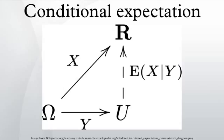Let (Ω, F, P) be a probability space, X a random variable on that probability space, and H an event with strictly positive probability. Then the conditional expectation of X given the event H is defined, where the range of X and the conditional probability of A knowing H are used. When P(H) equals zero, the Borel-Kolmogorov paradox demonstrates the ambiguity of attempting to define the conditional probability knowing the event H. The above formula shows that this problem transposes to the conditional expectation.